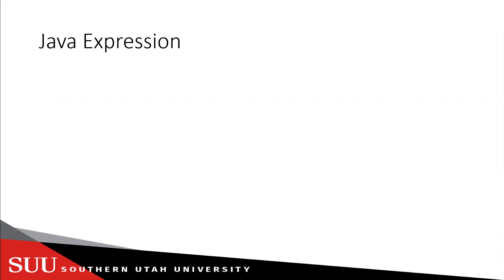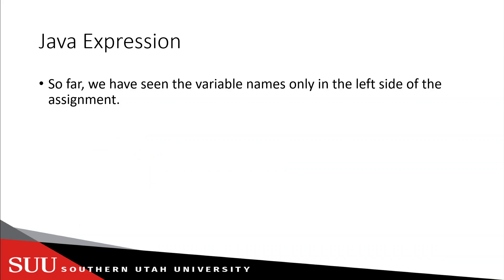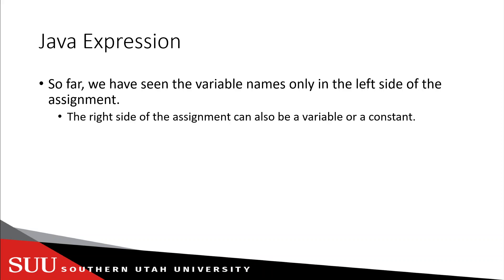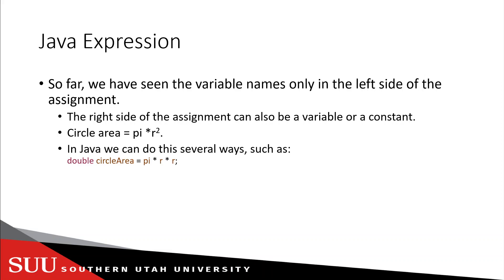Now let's talk about Java expressions. So far we have seen variable names only on the left of the assignment, but we can have them on the right of the assignment as well. The right side can be a variable or a constant. For example, if we want to declare the circle's area — which is pi times r squared — we can define a double called circleArea that contains pi times r times r.